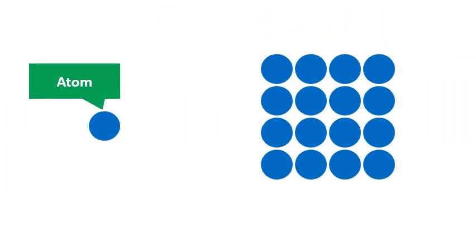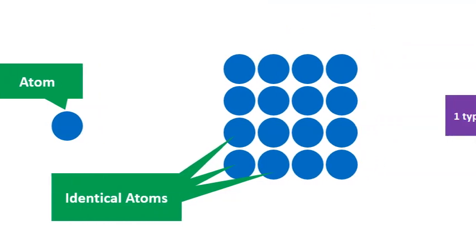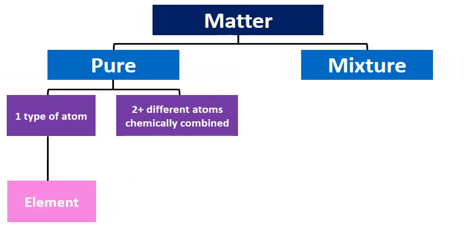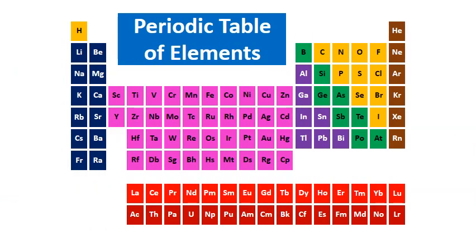Here's our one atom and here's a whole bunch of identical atoms. We call these things elements. All 118 elements can be found on the periodic table of elements, and each one is made of just one type of atom.